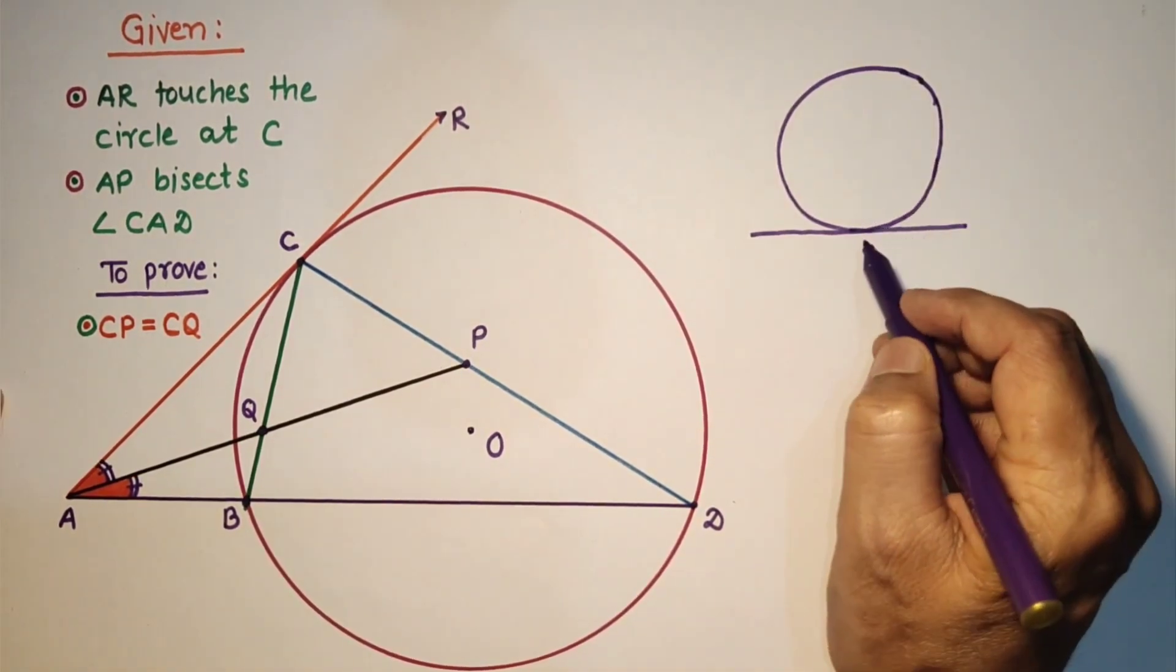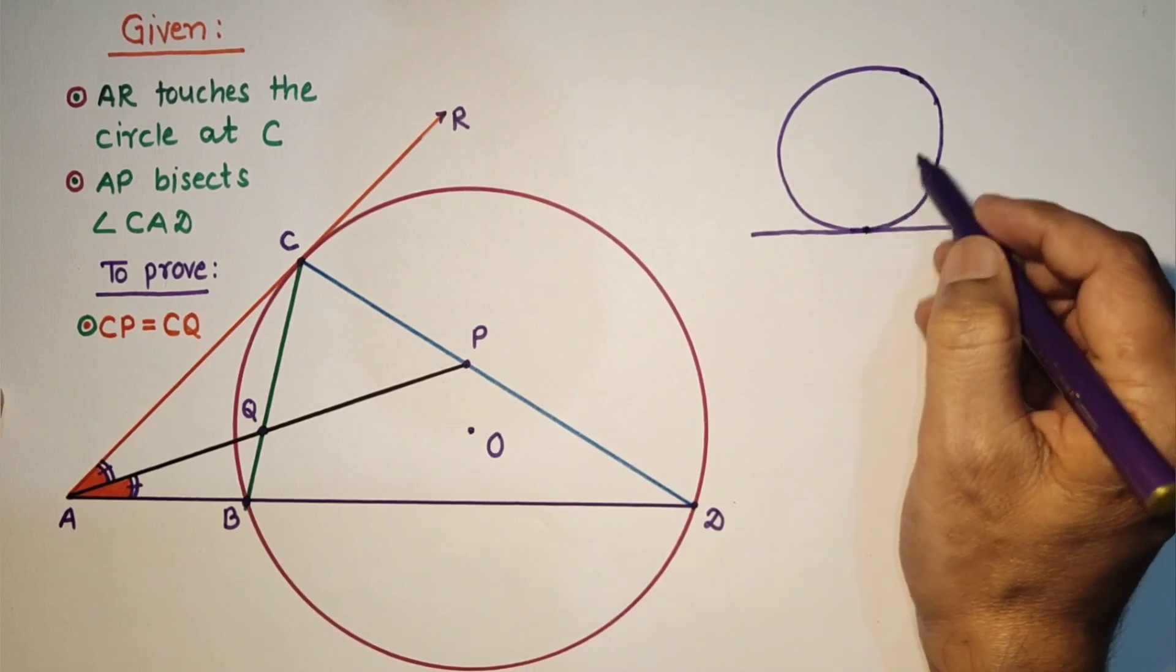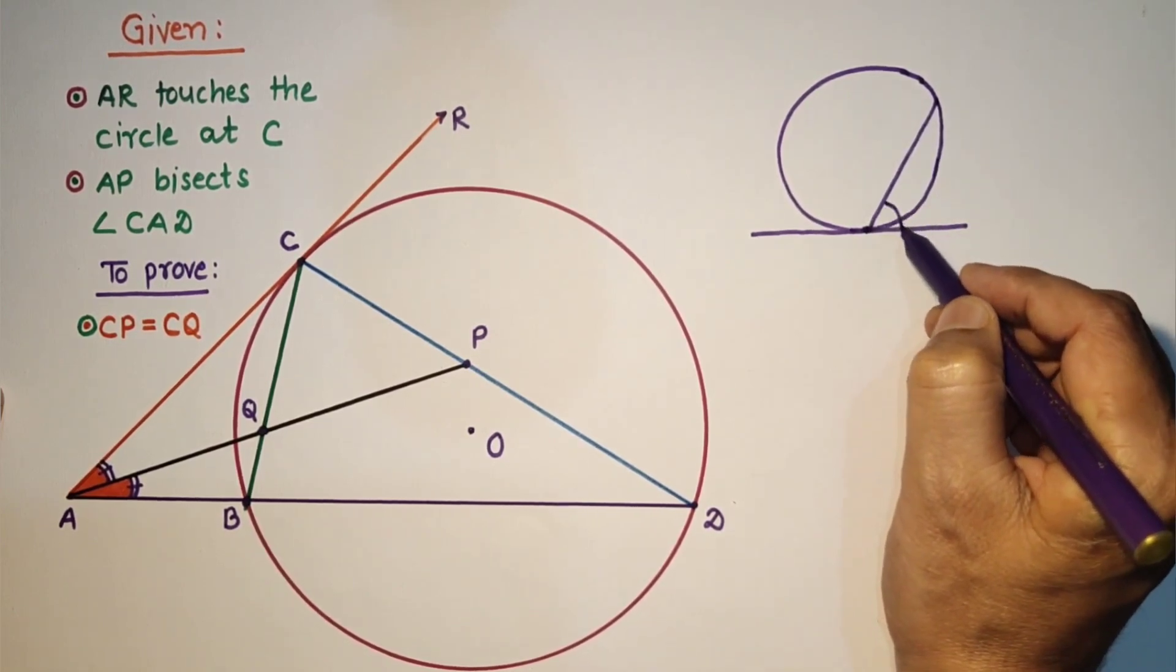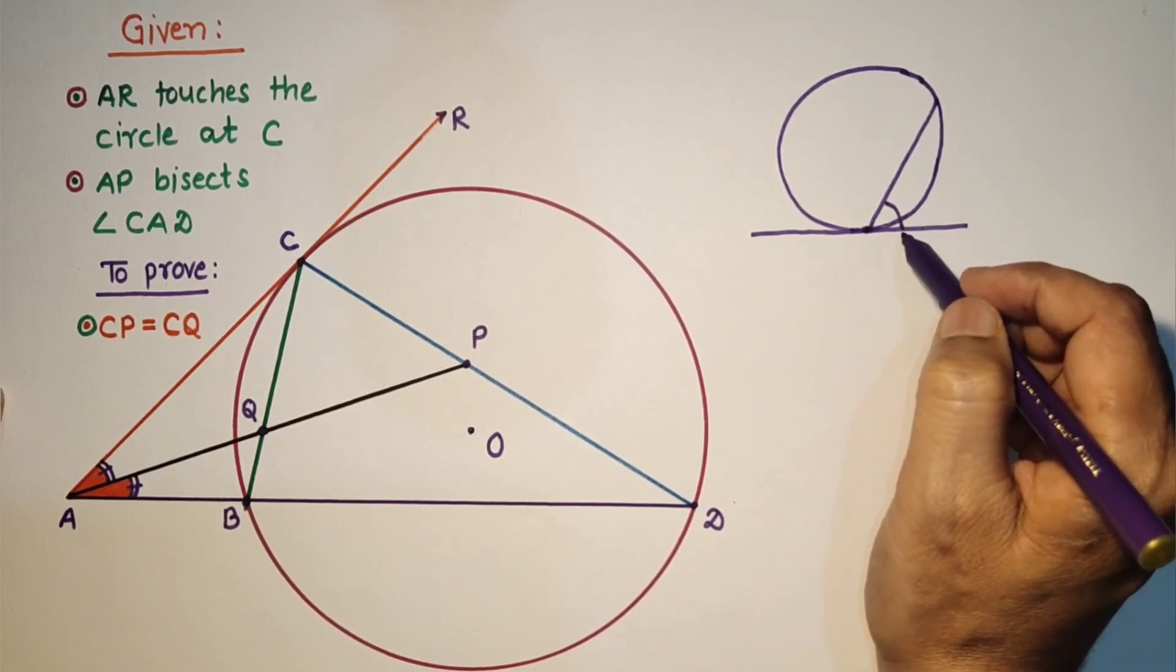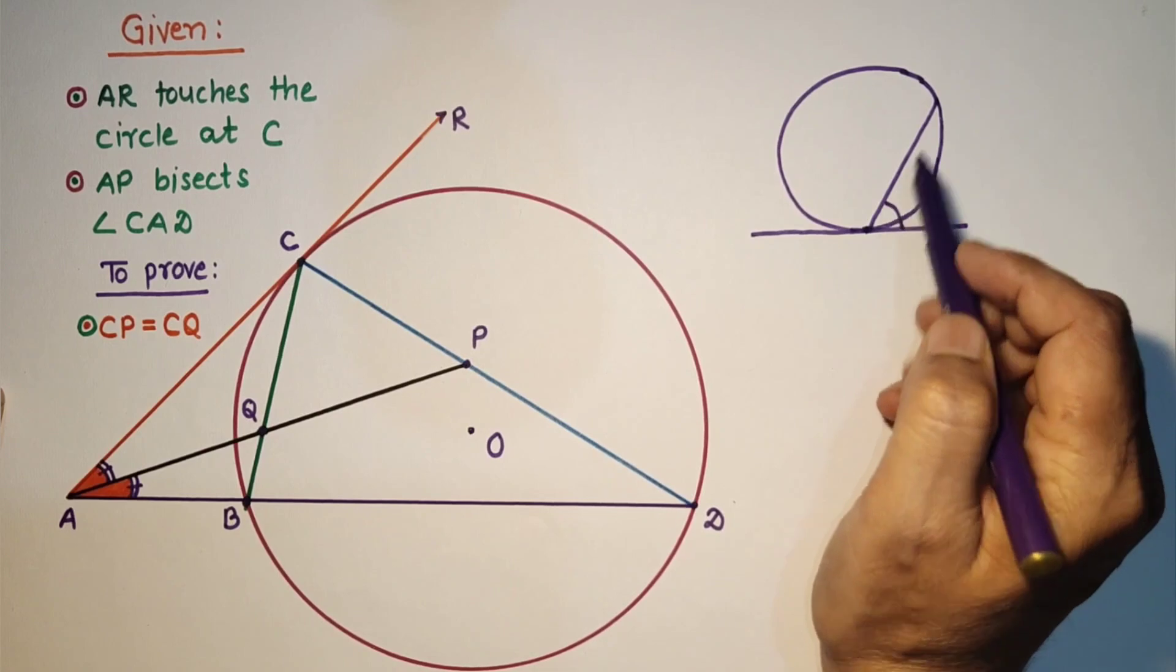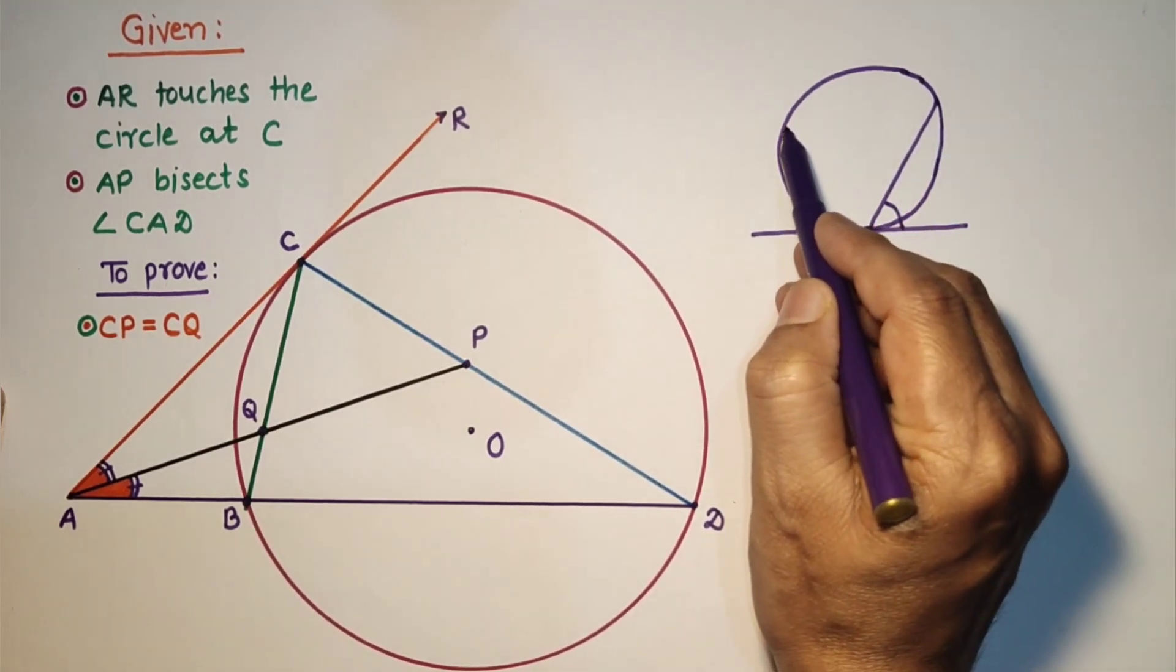The angle between the chord and the tangent, this is the chord, this is the angle - the angle between chord and the tangent will be equal to the angle subtended by that chord in the alternate segment.